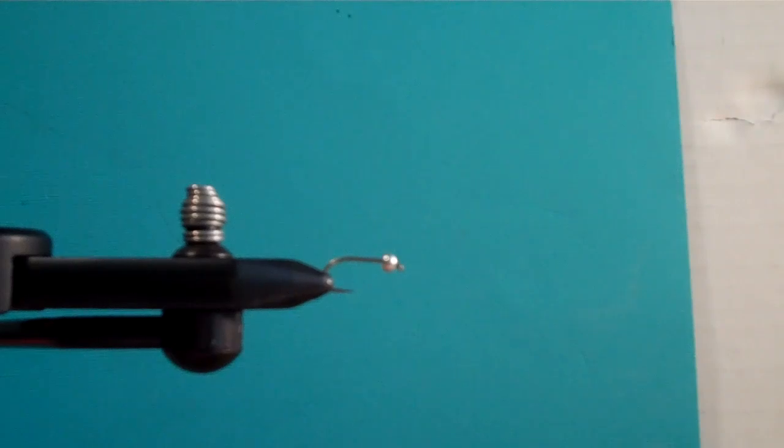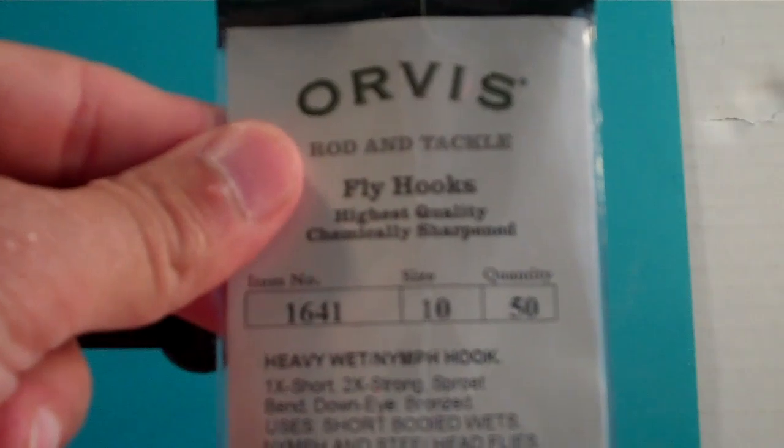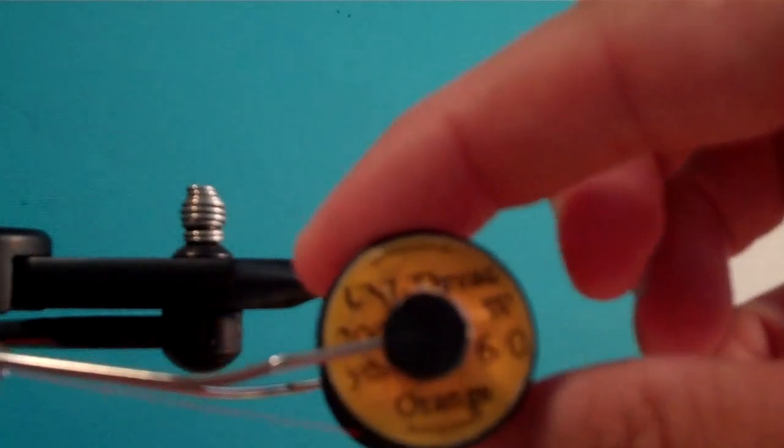It has very few ingredients. First we're going to start off with the hook. It's going to be an Orvis heavy wet nymph hook, size 10. And the beads are 3.5mm. And we're going to use uni-thread.